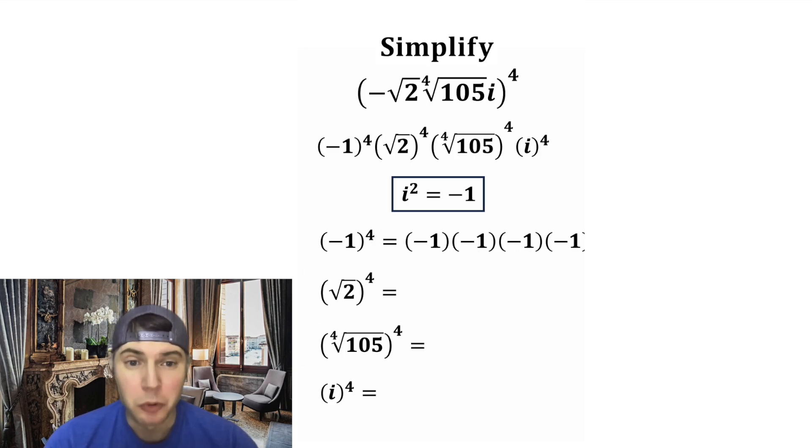Negative 1 to the fourth means negative 1 multiplied four times. And negative 1 times negative 1 is equal to 1. Negative 1 times negative 1 is still equal to 1. And 1 times 1 is equal to 1.